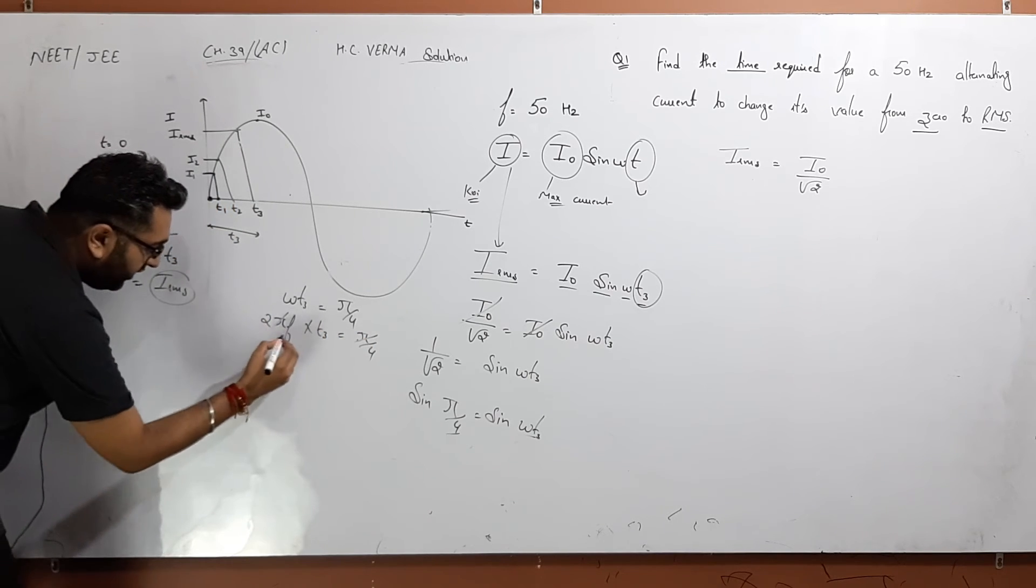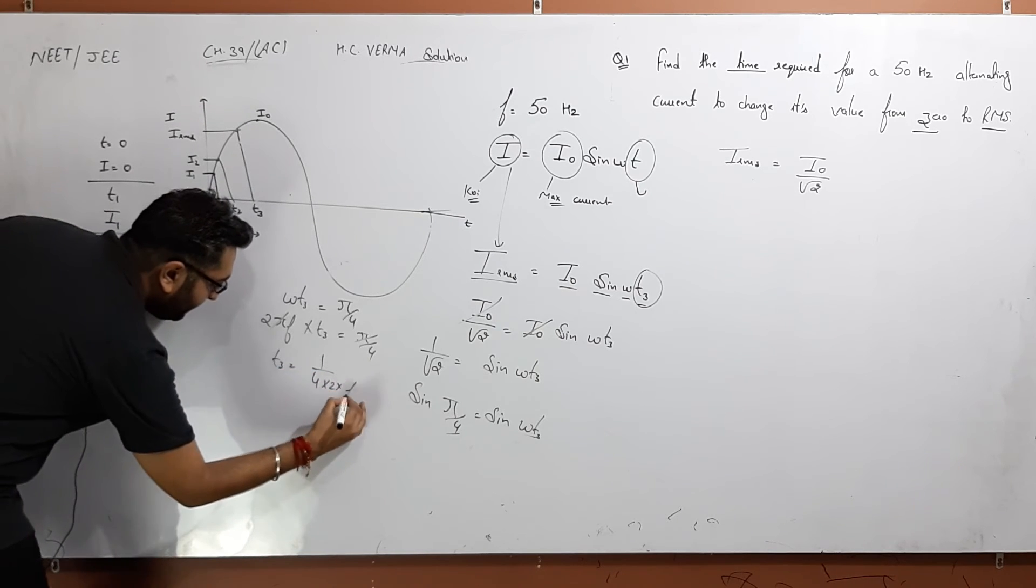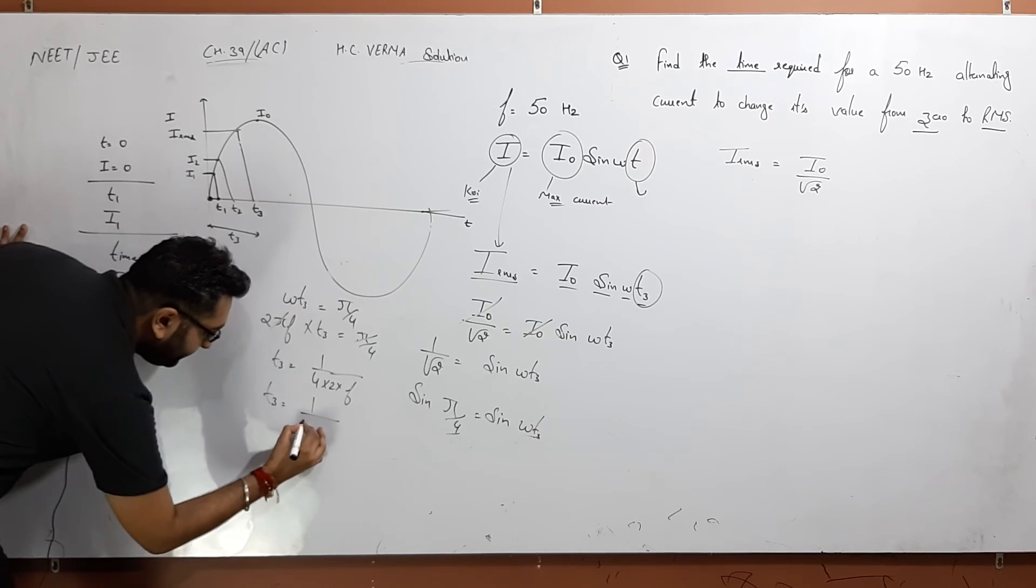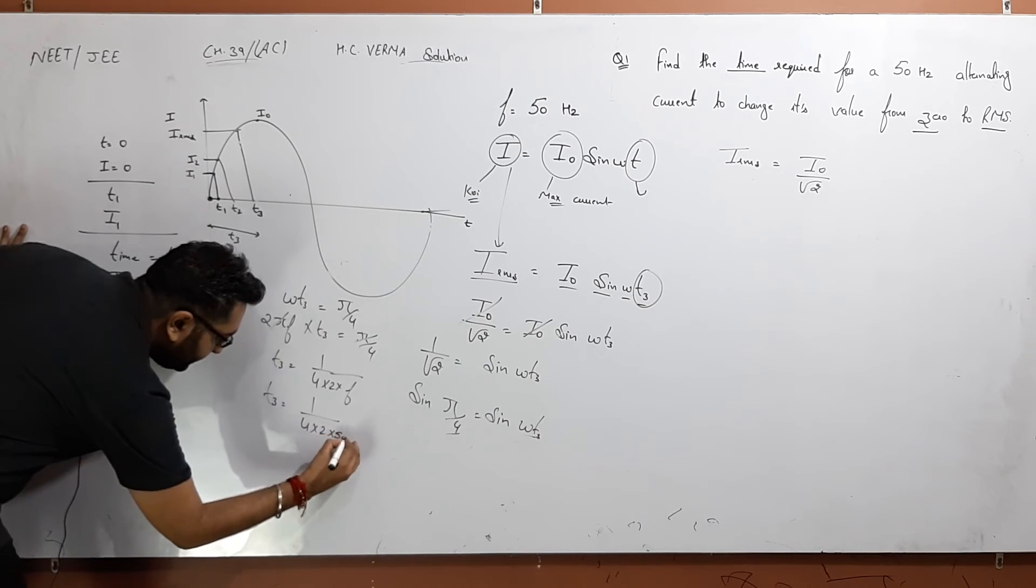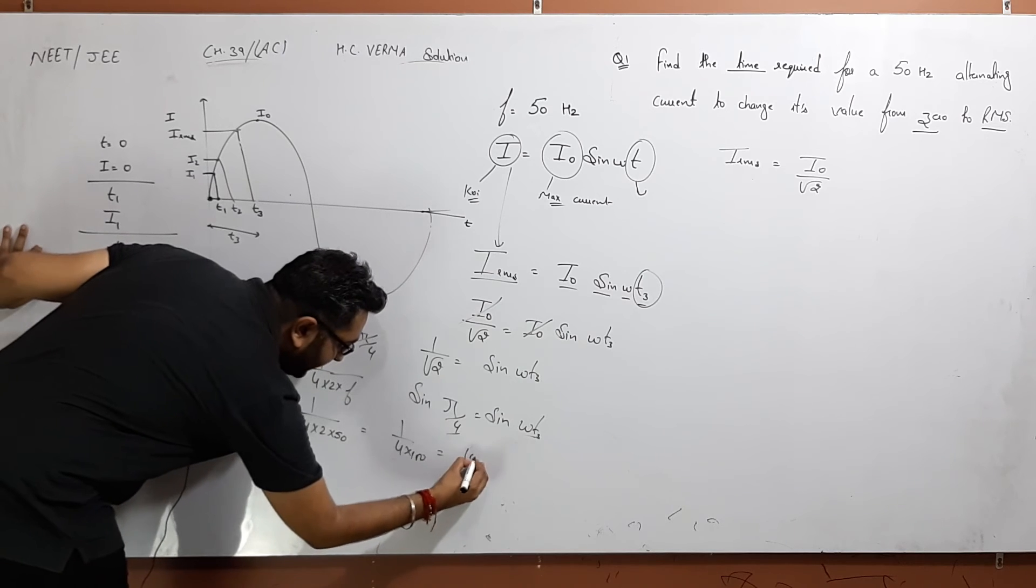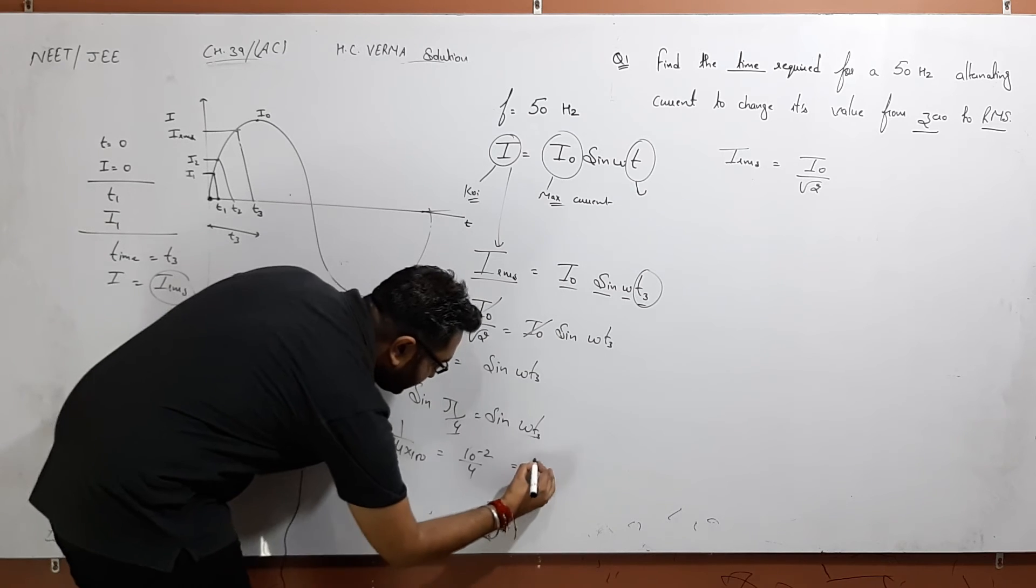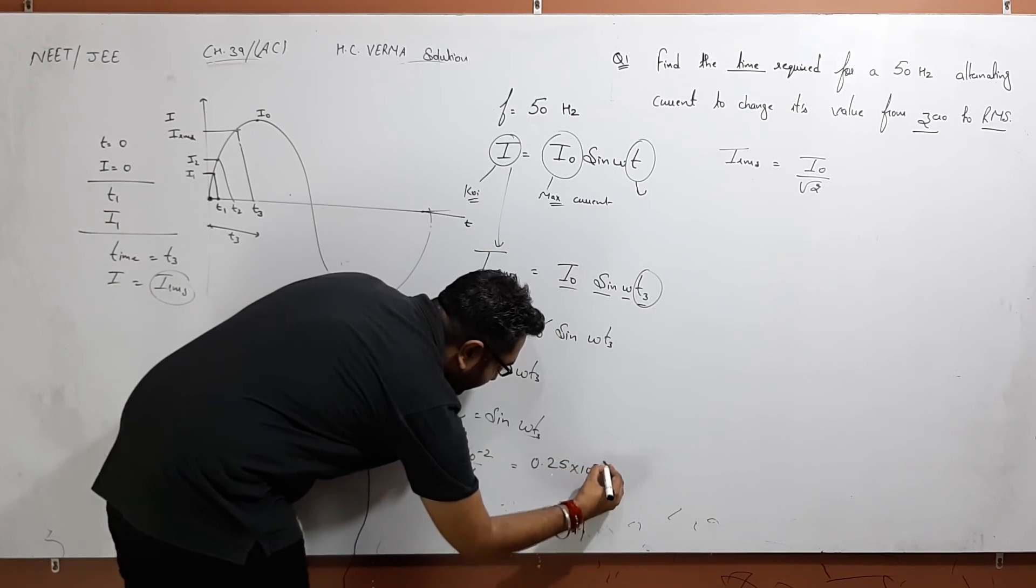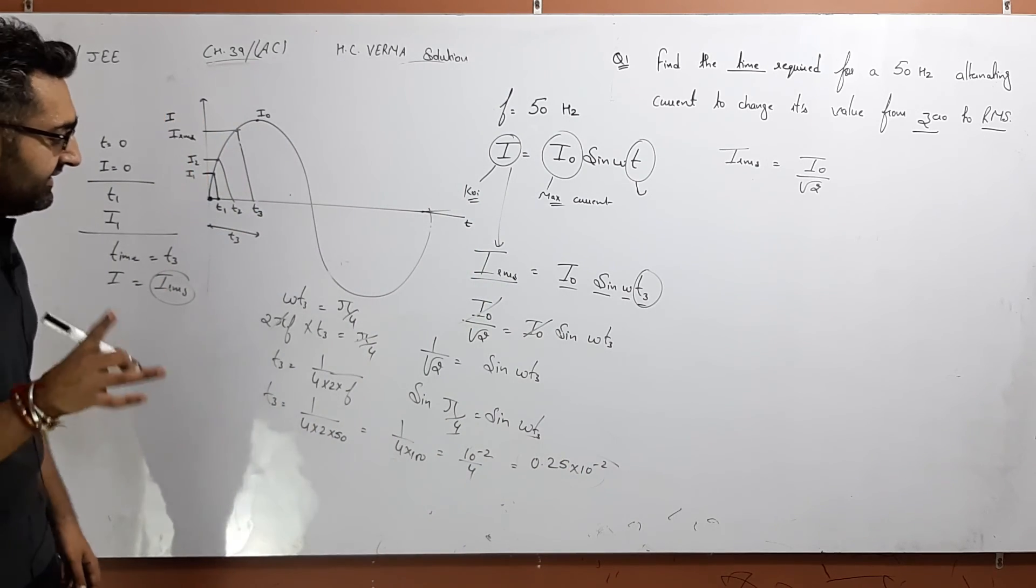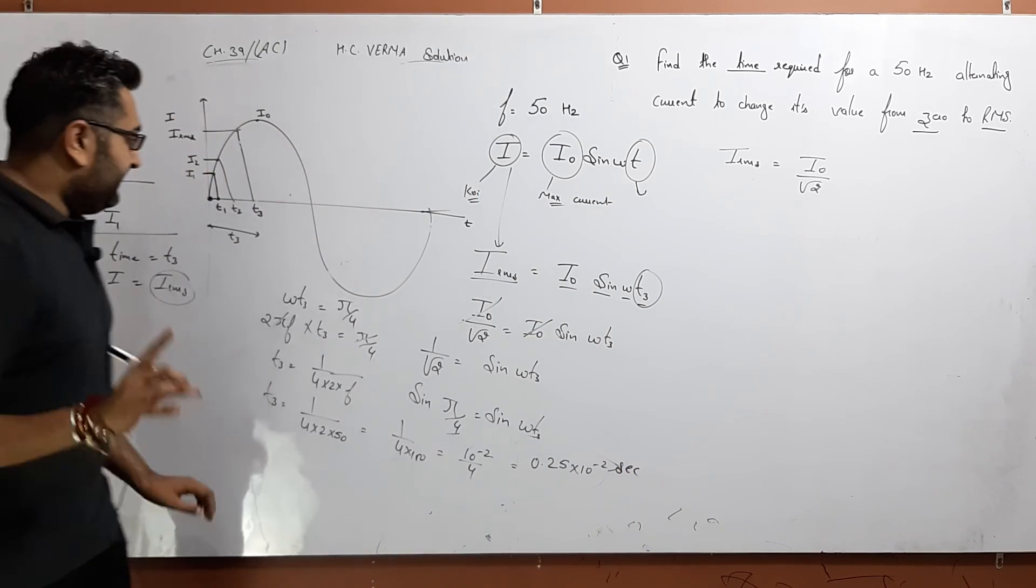Omega T3 is equal to pi by 4. Since omega equals 2 pi f, T3 is equal to 1 by 4 times 2 times f. T3 is equal to 1 by 4 times 2 times 50, which is 1 by 400. So 100 times 10 to the minus 2 divided by 4 equals 0.25 times 10 to the minus 2 seconds.